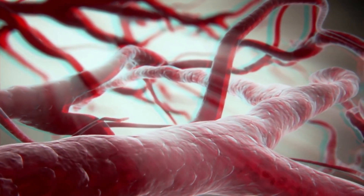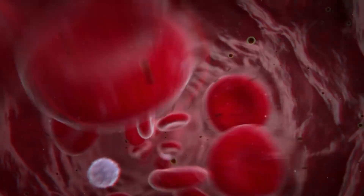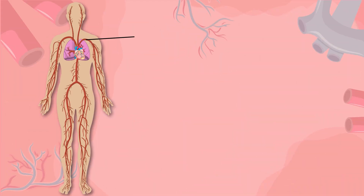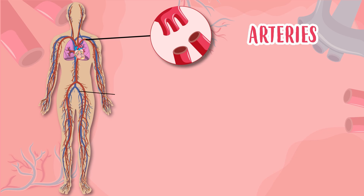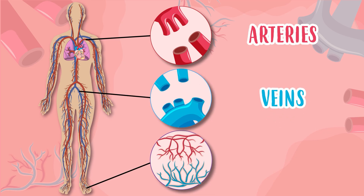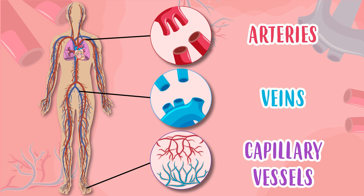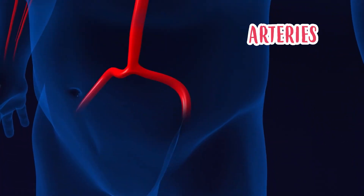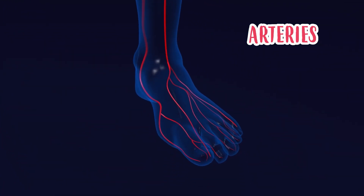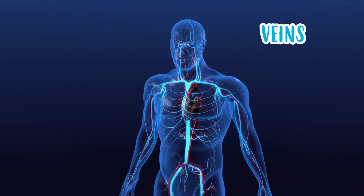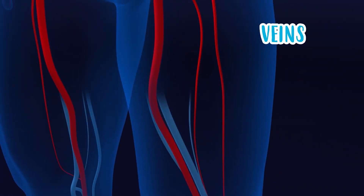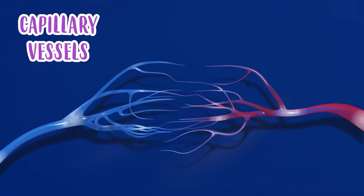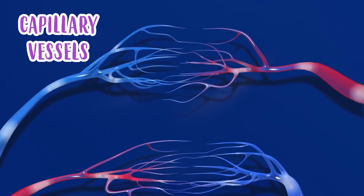When blood exits our heart it flows through our whole body through blood vessels, and there are three types: arteries, veins, and capillary vessels. Arteries deliver oxygen and nutrient-rich blood to all our organs. Veins take that blood, now low in oxygen, back to the heart. Capillary vessels, which are very small, connect arteries with veins and cells.